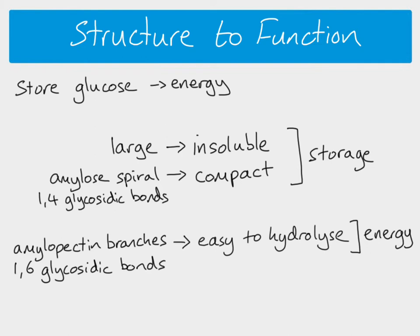If you look at amylose, it's only got two glucose molecules available for hydrolysis at any time - one at each end. Whereas with amylopectin, because the branches are there, you've got glucose at the end of every single branch that can be hydrolyzed, so more glucose is available. The 1,6 glycosidic bonds mean it's very easy to hydrolyze a lot of glucose, making it suitable for release of energy.